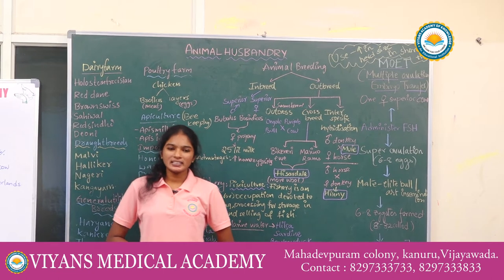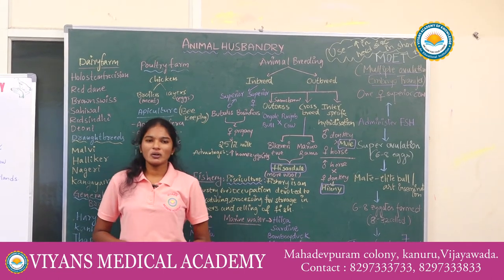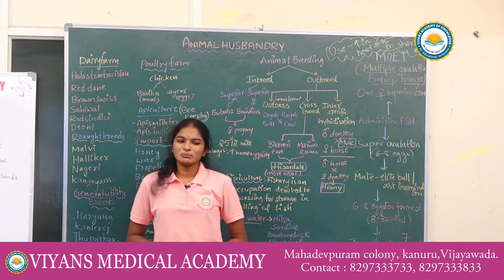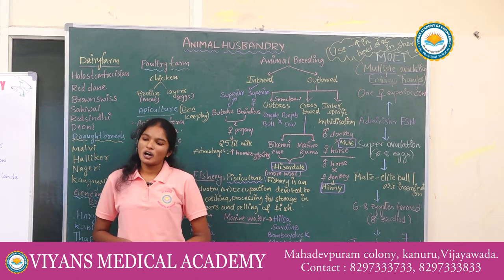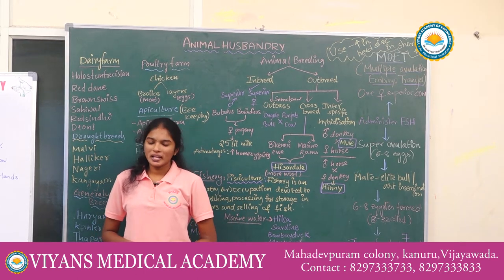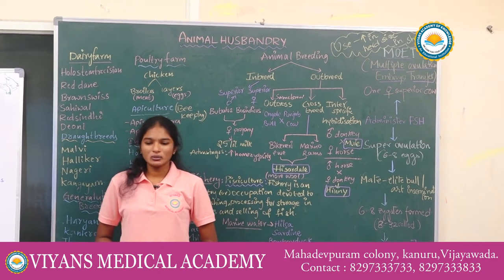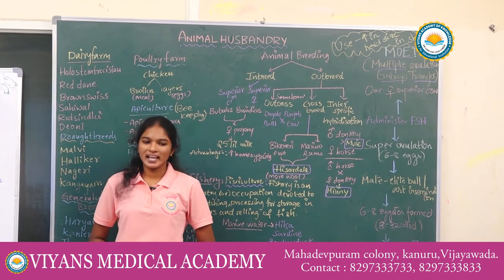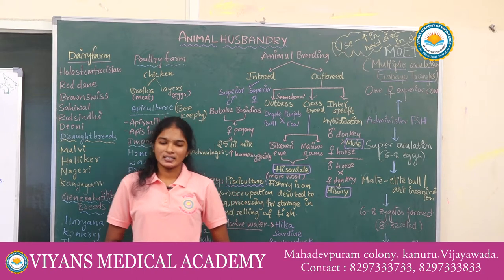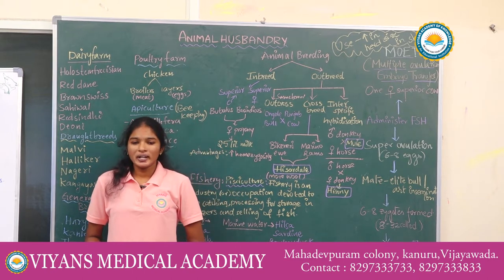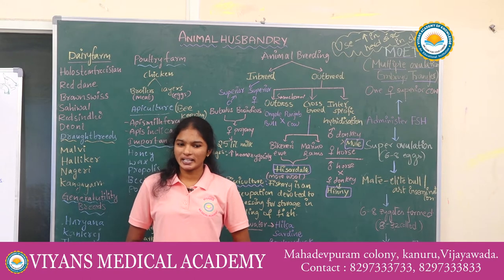Animal Husbandry is an agriculture practice of raising and breeding livestock. It includes buffaloes, cows, sheep, cattle, etc. However, the term livestock is often used to refer to farm animals. It includes, since time immemorial, animals like plants, crabs, silkworms, honeybees, etc. They give additional employment and income mainly in rural areas.